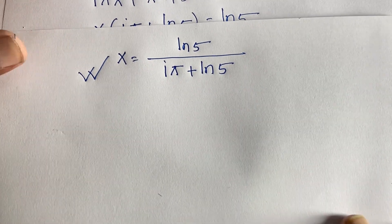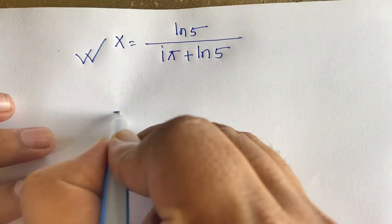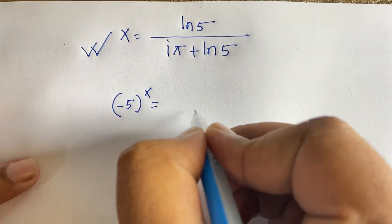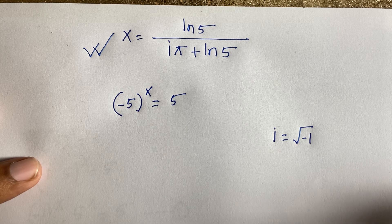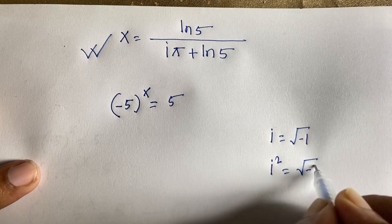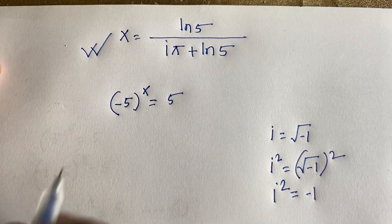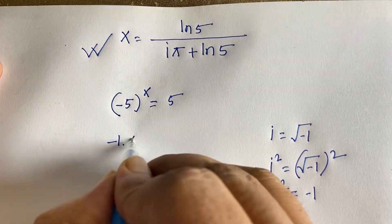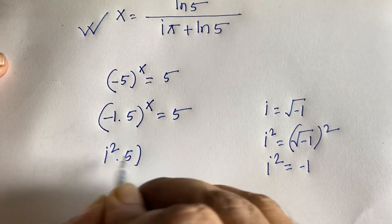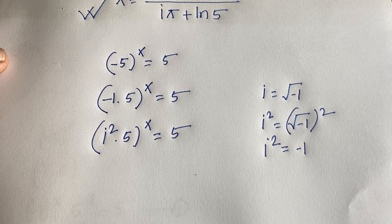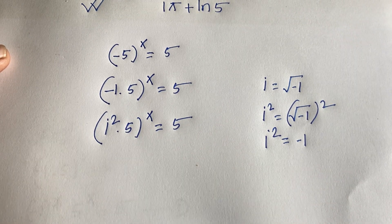Now for Method 2. Our question is (-5)^x = 5. We use the fact that i = √(-1), so i² = -1. Therefore (-1) can be replaced with i², and (-5)^x becomes (i² × 5)^x = 5.